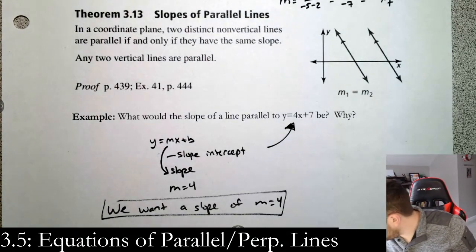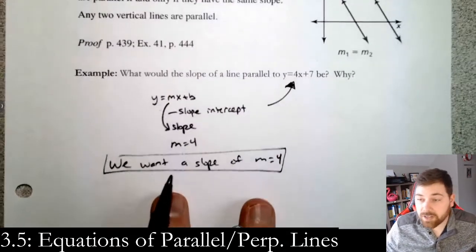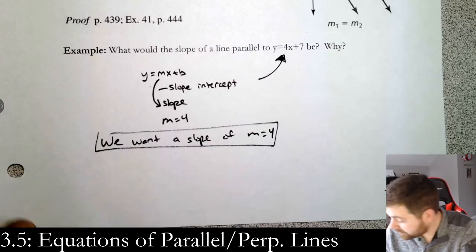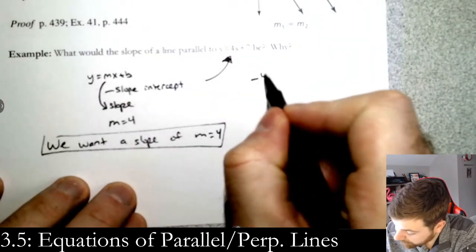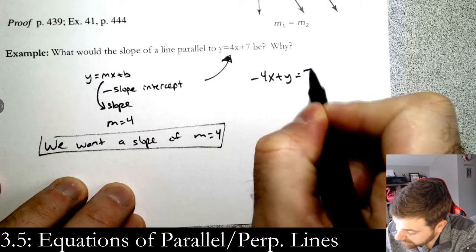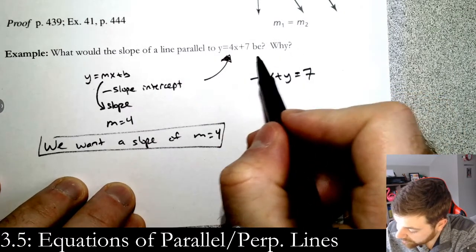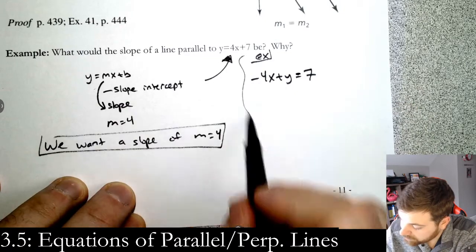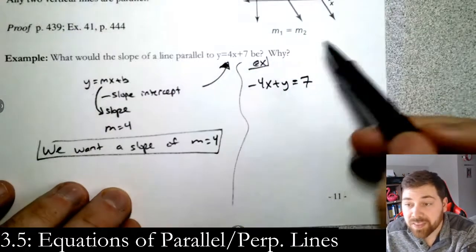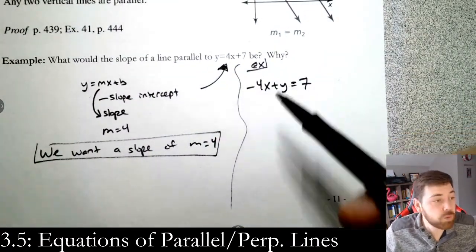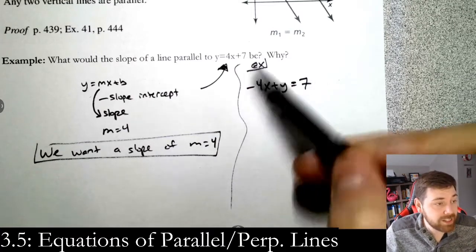For example, if you were given a line such as this—something like negative 4x plus y equals 7. This is another example, very similar, actually the same line. This is now in standard form. If you want to find the slope parallel to this, you first need to make sure it's in slope intercept form.